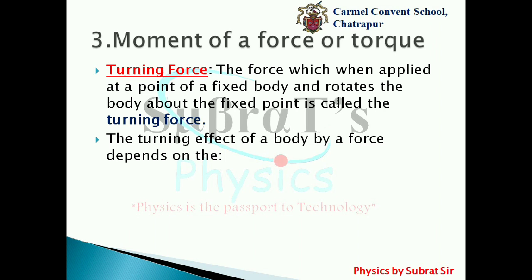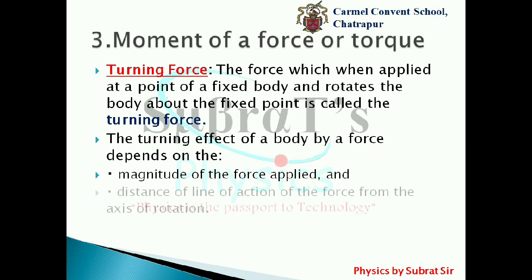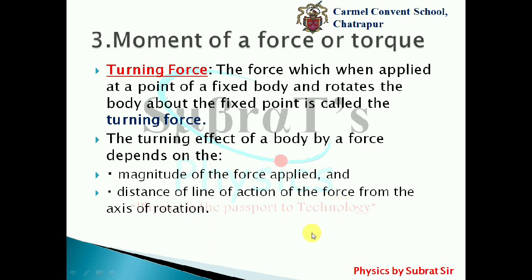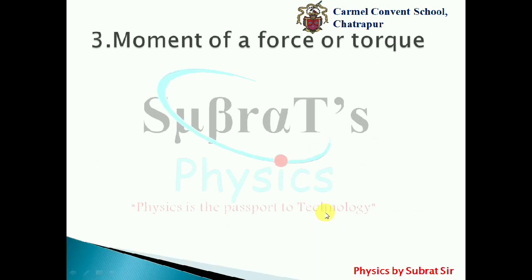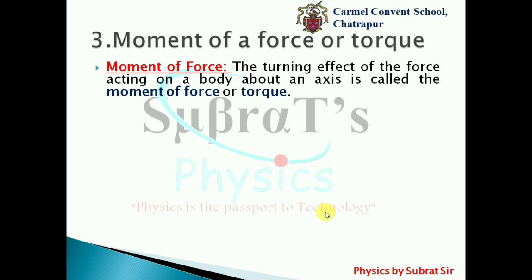The turning effect on a body by a force depends upon two things. The first one is the magnitude of the force applied, and the second one is the distance of the line of action of the force from the axis of rotation.